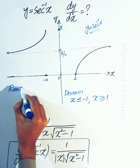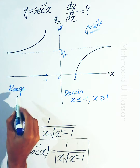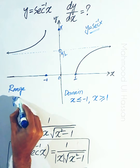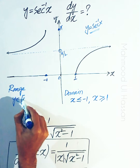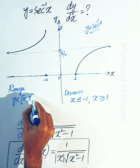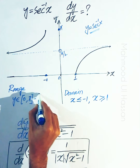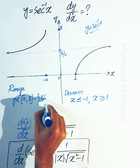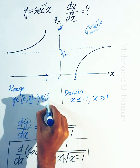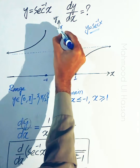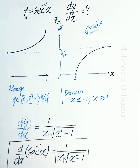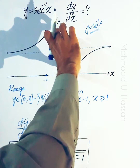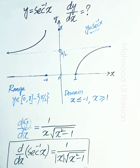Similarly, the range of secant inverse of x: y belongs to the closed interval 0 to pi, minus the point pi over 2. So the range is from 0 to pi excluding pi by 2.